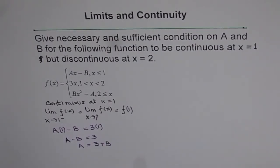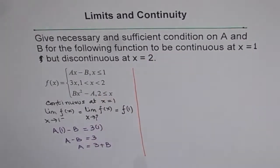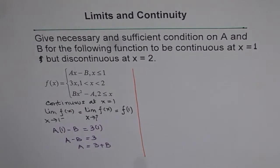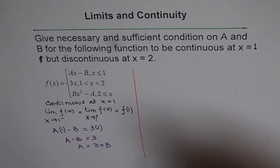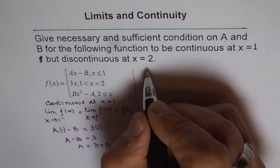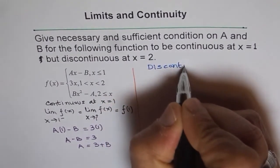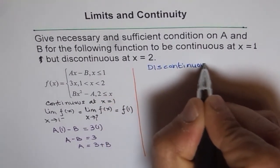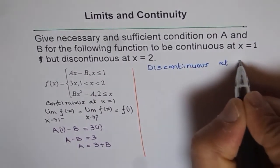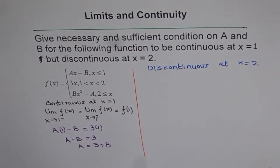So we get one of the conditions. Now we will do the second part. The second part before us is, the function should be discontinuous. So we want it to be discontinuous at x equals to 2. That is what we want.